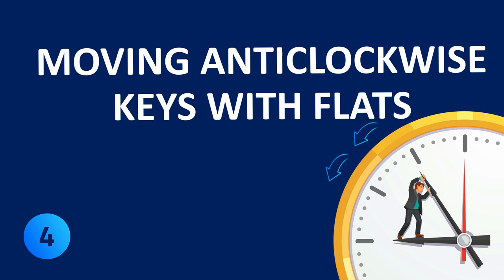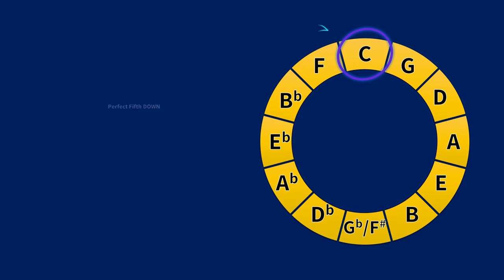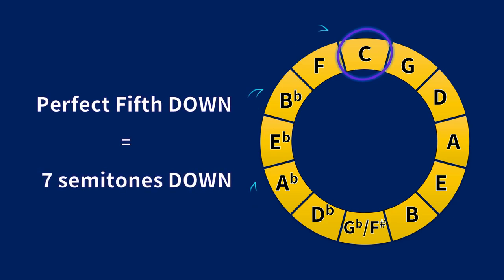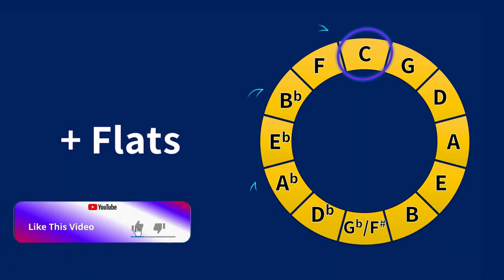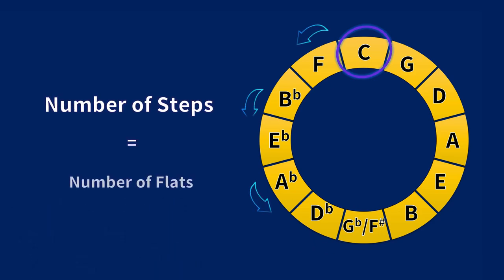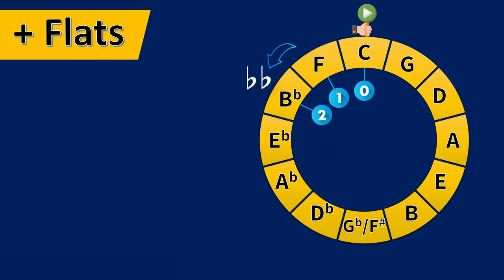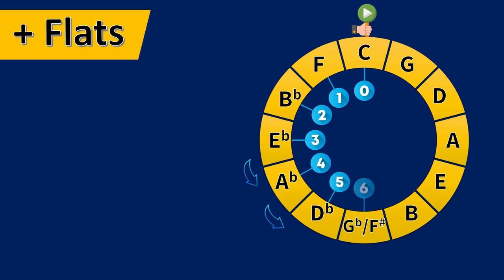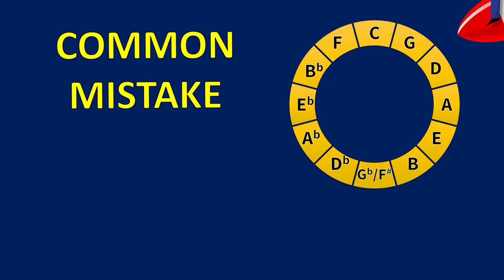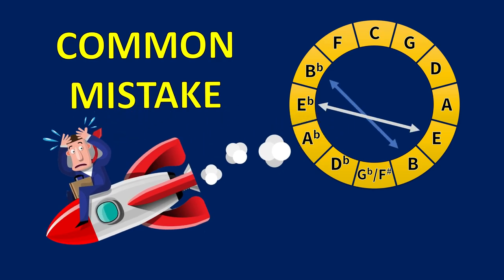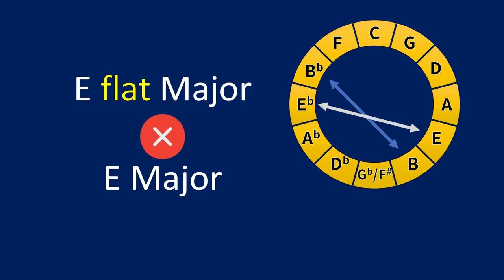Moving anticlockwise: keys with flats. Moving anticlockwise around the circle we count down in perfect fifths, and each key gains one flat. The number of steps anticlockwise tells you how many flats the key will have. Starting from C: one step anticlockwise gives F major — one flat; two steps gives B flat major — two flats; E flat major has three flats, A flat major four, D flat major five, and G flat major six flats. Be careful: many students confuse B flat major with B major, or E flat major with E major. Always specify the word 'flat' in the title of keys with flats.